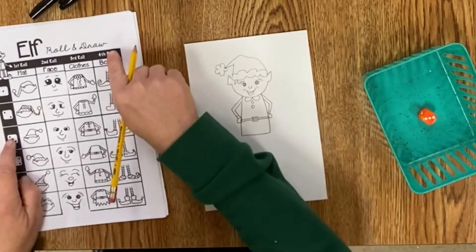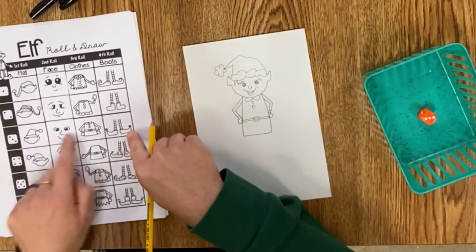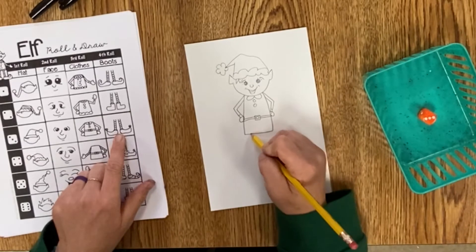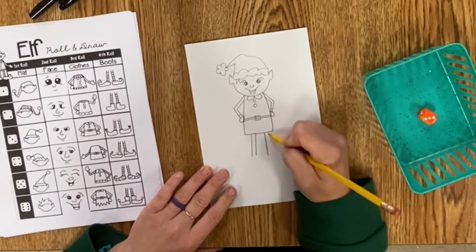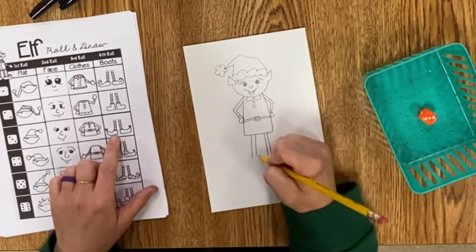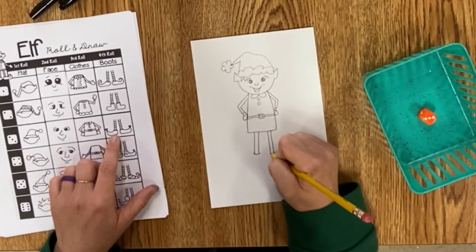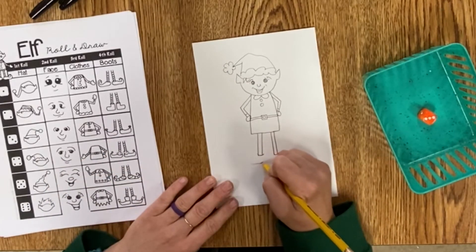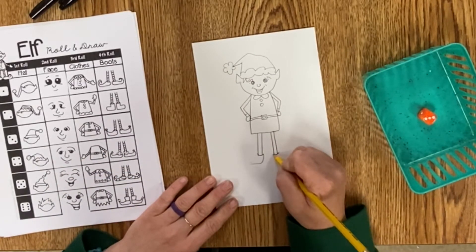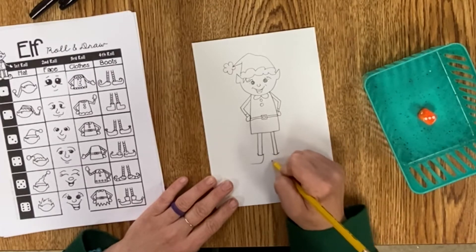Okay, now I'm ready for my final turn. I got three again, so I'm going to draw the legs and the shoes. I like the shoes I got—they have little bells on the toes of them. That's what I think of when I think of elf shoes: bells on the toes or curly tipped shoes.